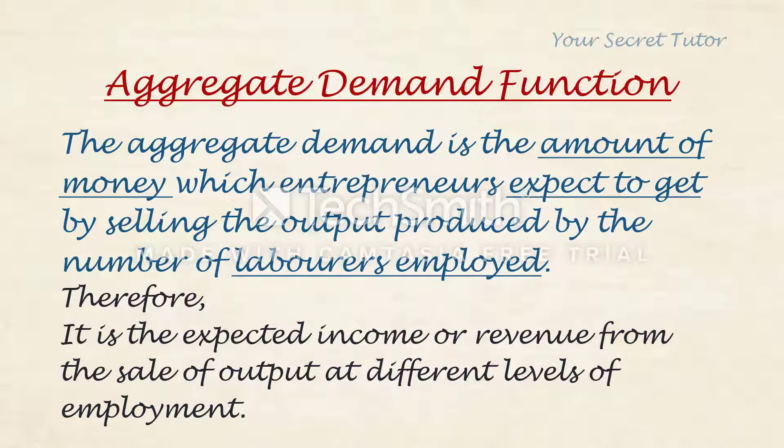So expected income or revenue from the sale of output at different levels of employment. Say employment is 100 units — then you need income. Employment is 200 units — then you need income. Employment is 500 units — then you need income. That is what we mean by different levels of employment.